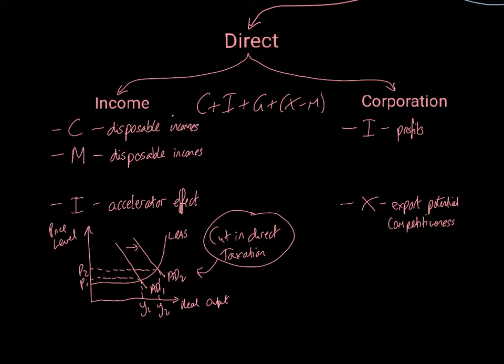But again, just thinking about what we've looked at up here, you need to be clear about which direct taxation is being affected. Because if you talk about income tax being changed, then your primary channel of analysis should be through the C component of aggregate demand. If you're talking about corporation tax, then your primary channel of analysis is going to be through I. And then you've also got these secondary effects on investment for income and exports for corporation tax, respectively.